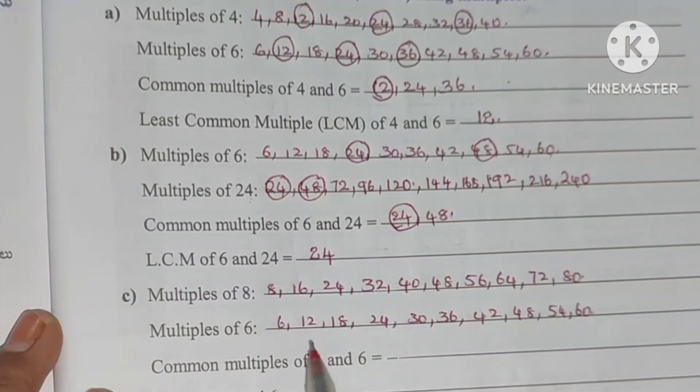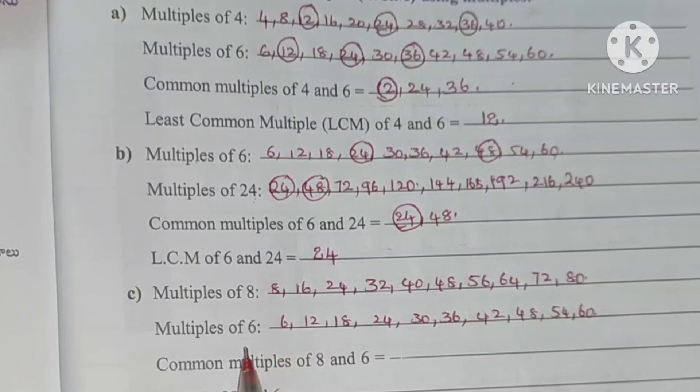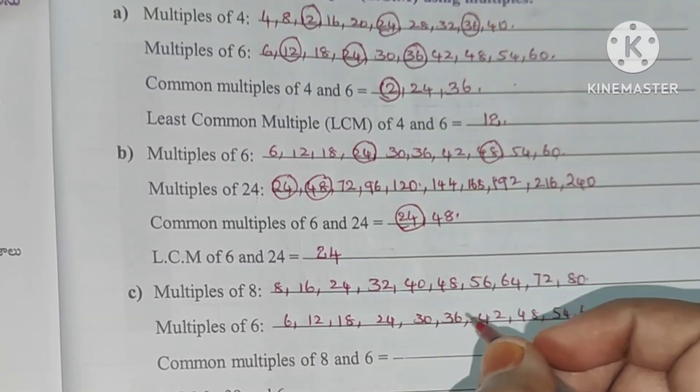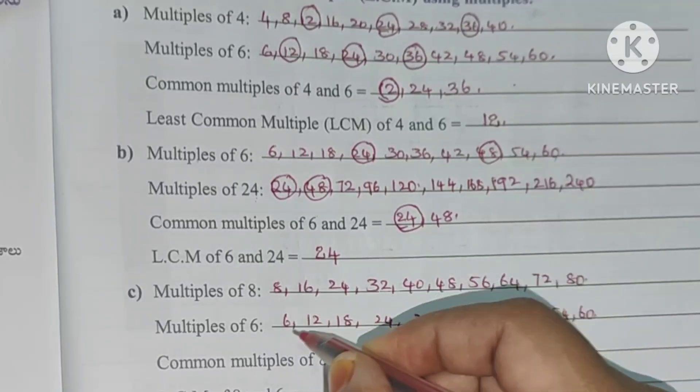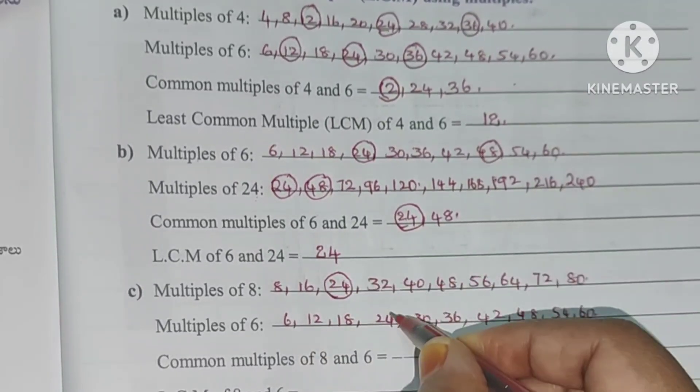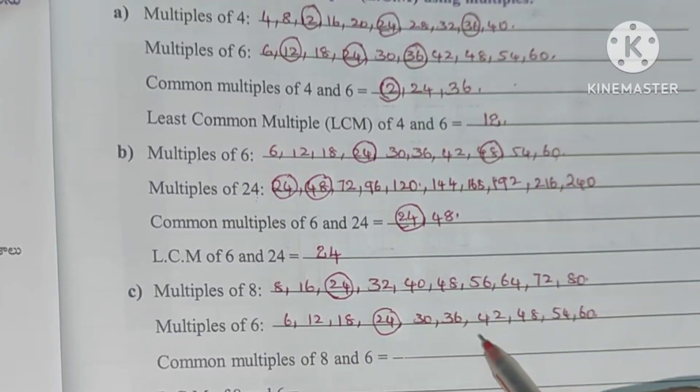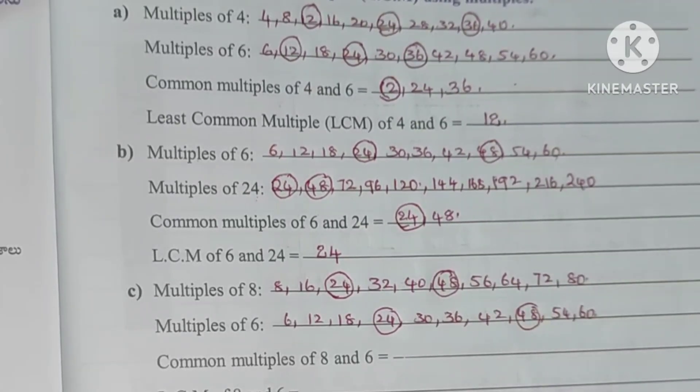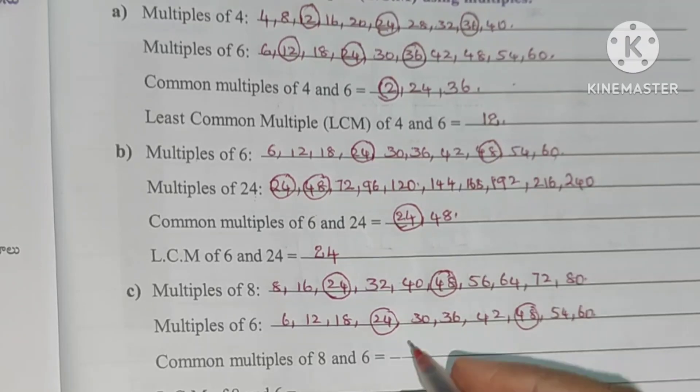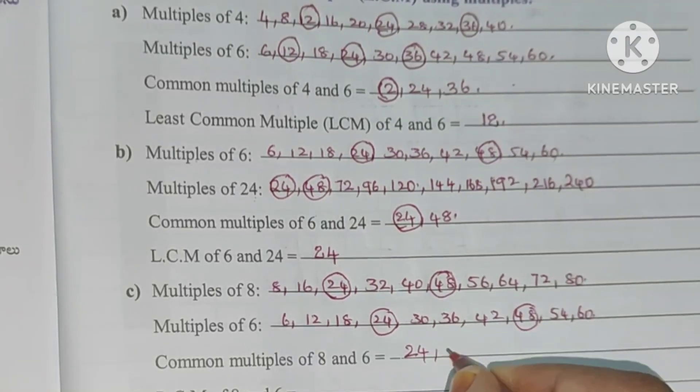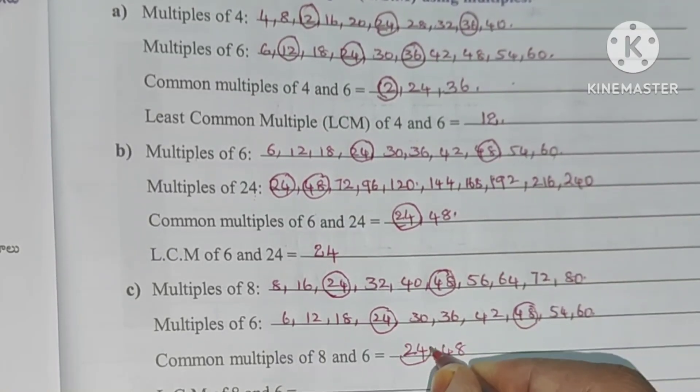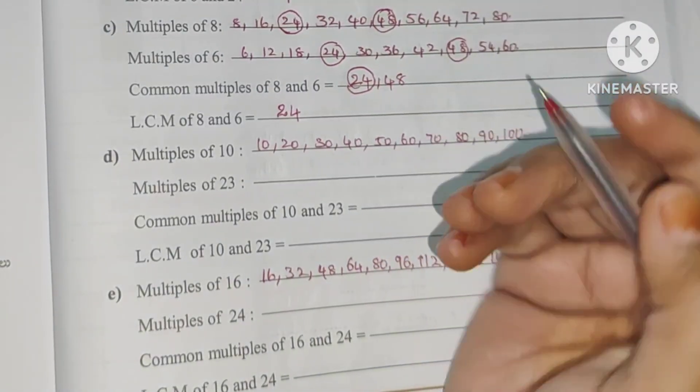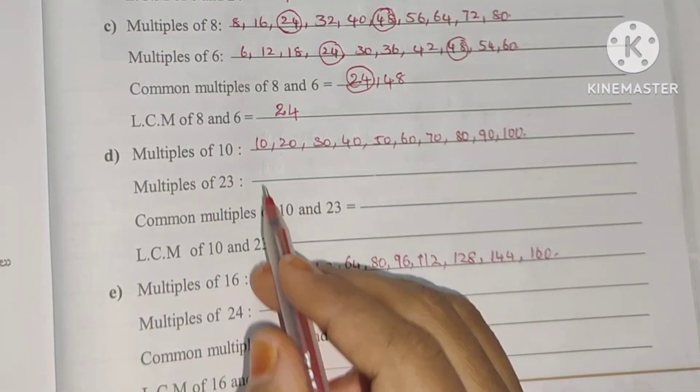Now here, 8 table is 16. We will find the first common multiples: 8, 16, 24, and 48. Now common multiples 24 and 48.